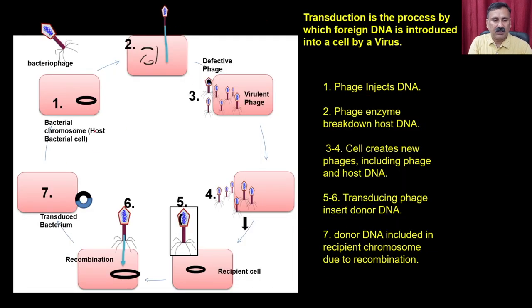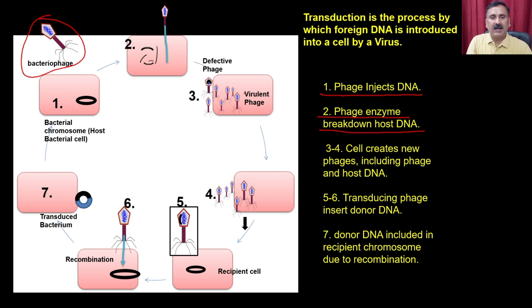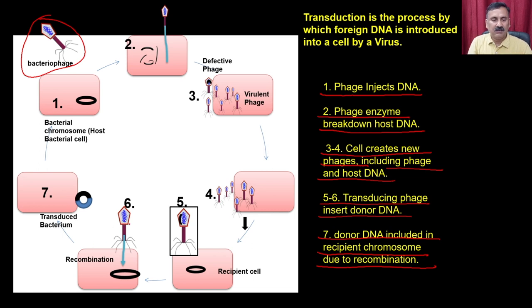To illustrate transduction, using the example of a bacteriophage: in step 1, the phage injects DNA into the host. Then phage enzymes break down the host DNA. In steps 3-4, the cell creates new phage including phage and host DNA. In steps 5-6, the transducing phage inserts donor DNA, and the donor DNA is included in the recipient chromosome through recombination. The injected DNA becomes part of the host genome, and when the host replicates, it also replicates the viral genome.